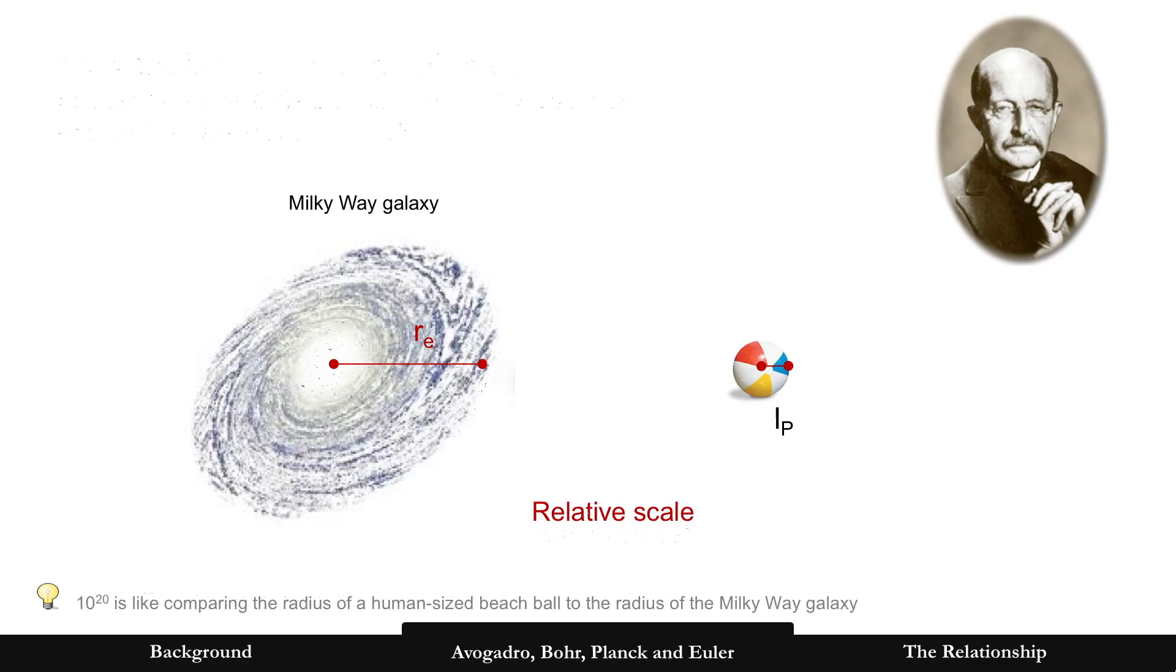All right, but to give you an idea of scales, now relative, let's just say that on the right Planck length was maybe the size of a radius of a human-sized beach ball. The electron in that case would be the radius of the Milky Way galaxy. That's how different in size this is. It's really small.